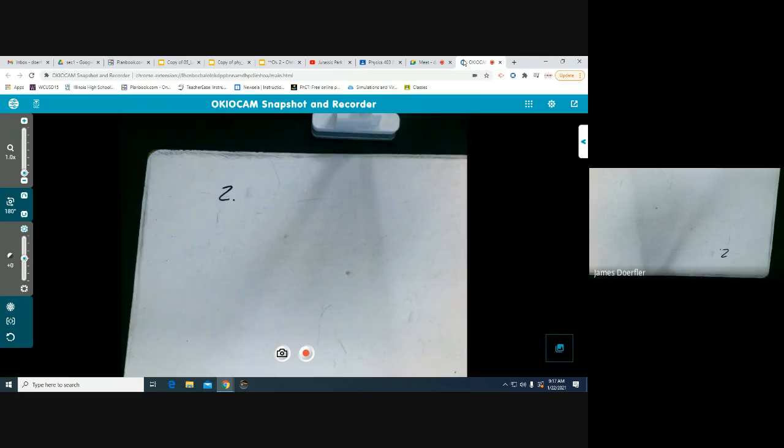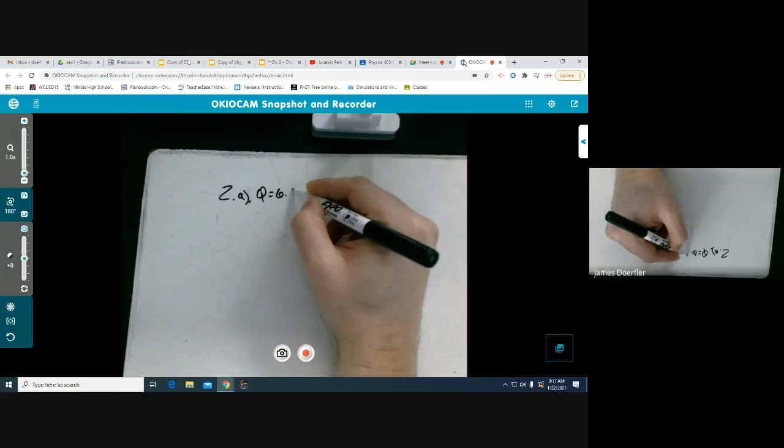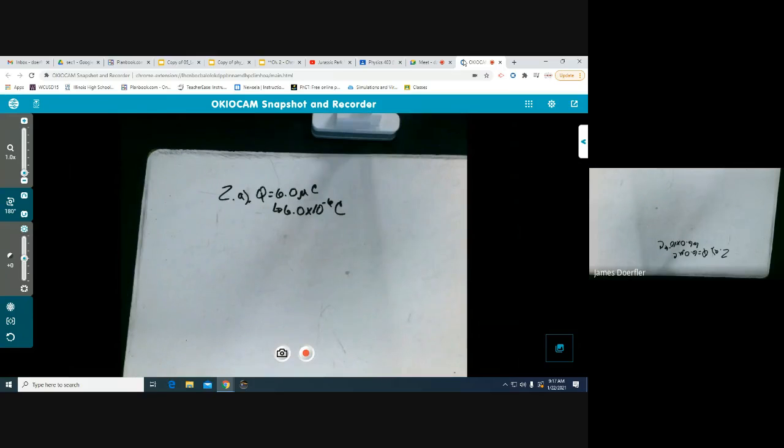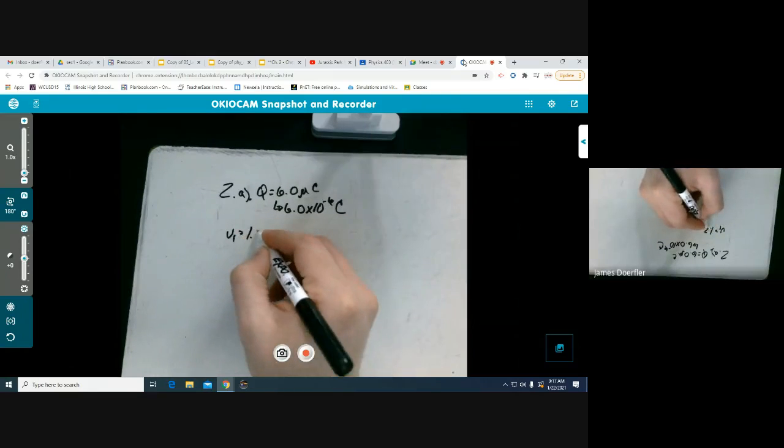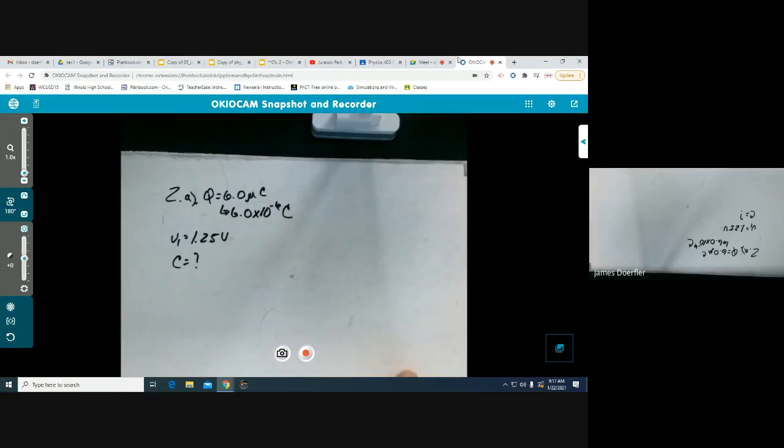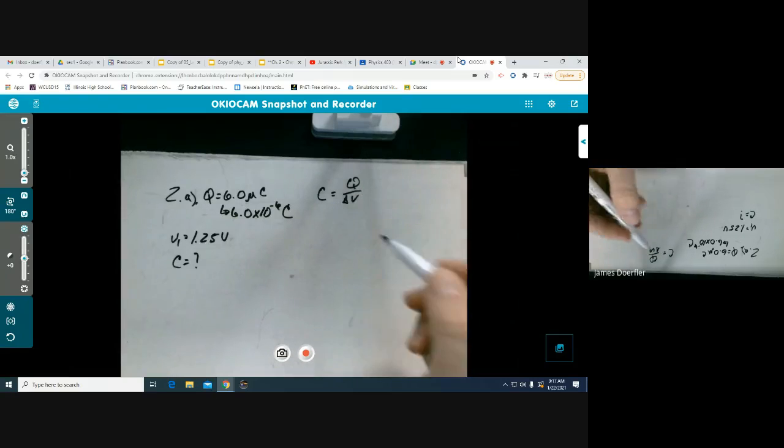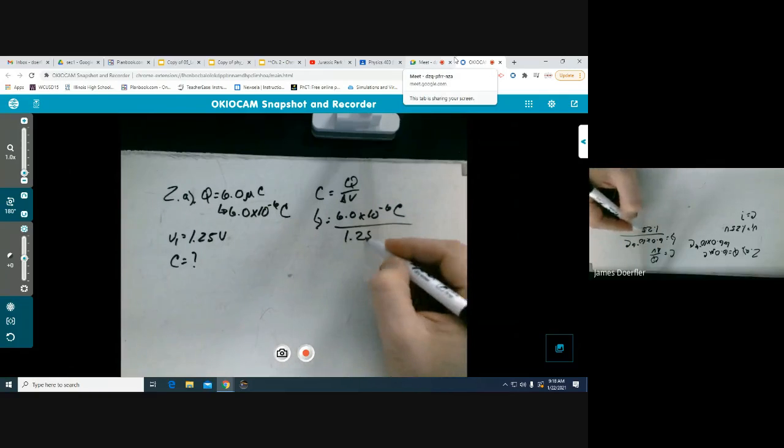Let's look at number two. Okay, I'm going to get this and we're going to do number two. So a parallel plate capacitor has a charge of 6.0 micro coulombs when charged by a potential difference of 1.25 volts. First find its capacitance. Okay, so what do we know first? We know that Q is going to be equal to 6.0 micro coulombs or 6.0 times 10 to the negative 6 coulombs. We know that our potential difference is 1.25 volts and we are trying to calculate the capacitance.